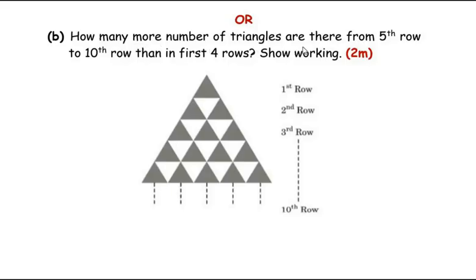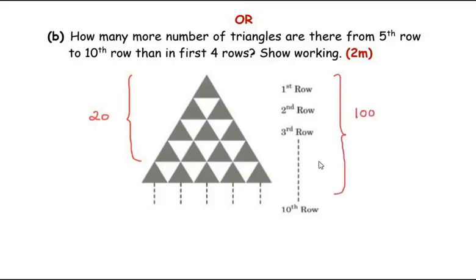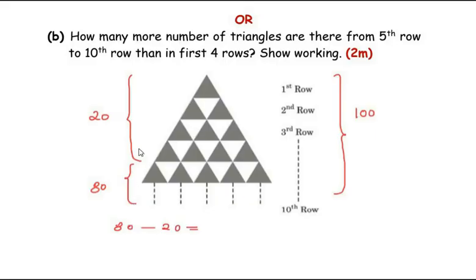The alternate question asks: how many more triangles are there from the 5th row to the 10th row than in the first four rows? We need the total triangles in the first four rows, then the total till the 10th row, subtract to get triangles from row 5 to 10, then take the difference again. For example if first four rows give 20 and total is 100, then rows 5–10 have 80, and 80 − 20 = 60 more.